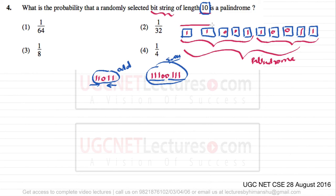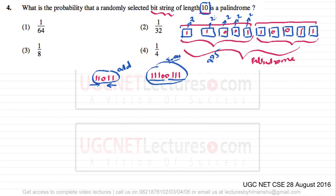If this complete string is a palindrome, then the first five bits must be exactly equal to the last five bits (reversed). For the first five positions, each bit can take two values — zero or one — since it is a bit string. So in total, for the first five bits there are 2 raised to the power 5 such combinations.